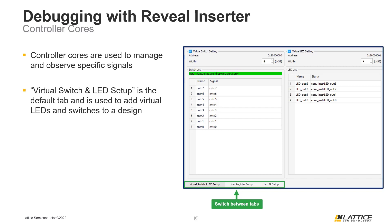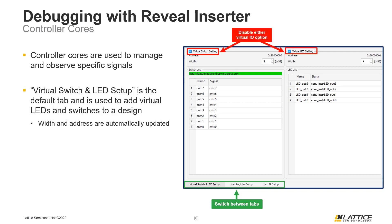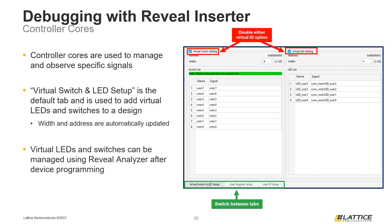In the Virtual Switch and LED Setup tab, users can define signals to be used as virtual switches and LEDs. Virtual LEDs are used to observe signals within a design, and virtual switches are used to control a signal. To add a signal as a virtual switch or LED, drag its name from the design tree to the list of switches or LEDs. The address and width fields will automatically update. Users can disable virtual switches or LEDs using the checkboxes at the top of the window. Once a design is programmed, users will be able to control and observe these signals using Reveal Analyzer.